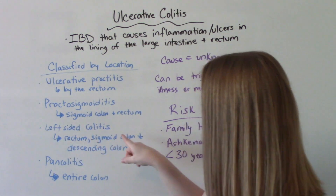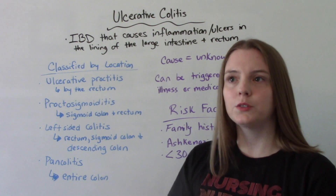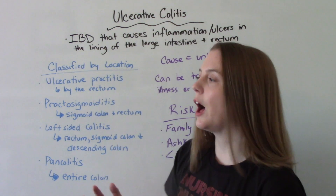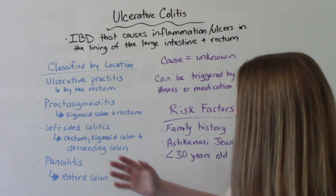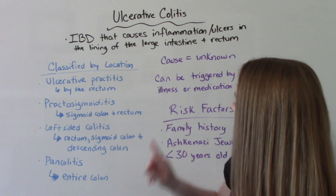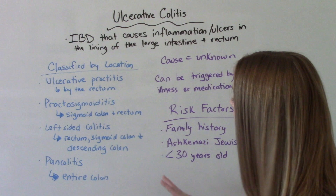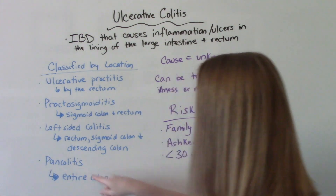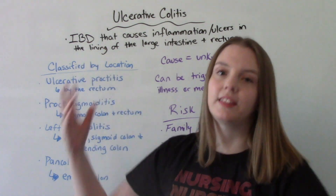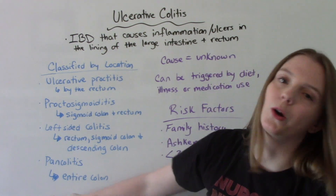Left-sided colitis is everything on the left side. If you picture the anatomy, this includes the rectum, the sigmoid colon, and the descending colon. And then finally we have pancolitis — pan means across everything, so it includes the entire colon.